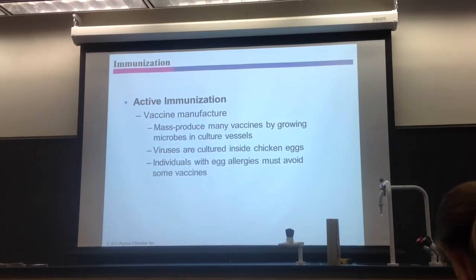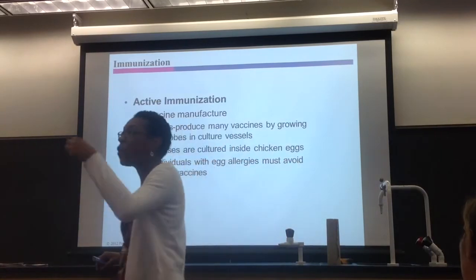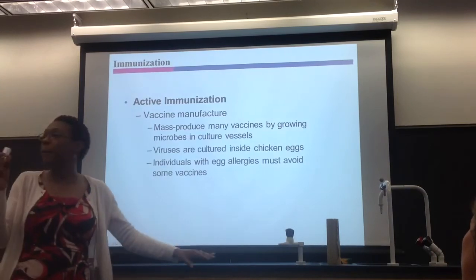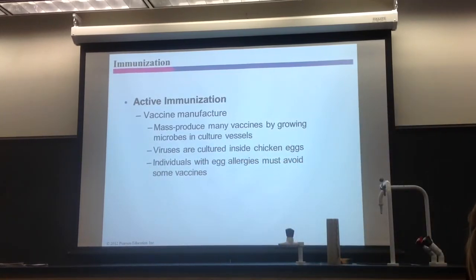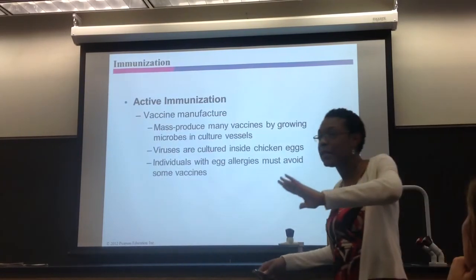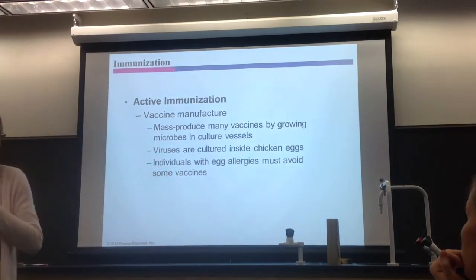If you have a virus, viruses cannot grow outside a cell, so you need a living cell to grow the virus in order to make the vaccine. Many viruses are propagated in eggs. If you are allergic to eggs, you can never get a vaccine where the virus was propagated in an egg, because you'll react to the egg proteins — and that could cause anaphylactic shock.